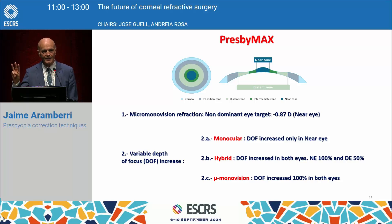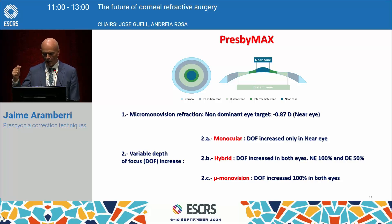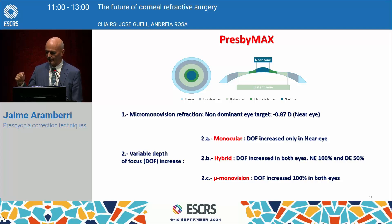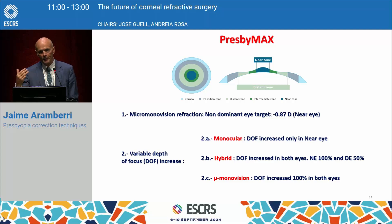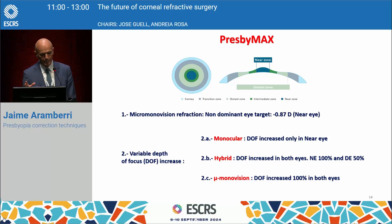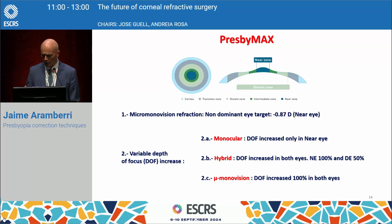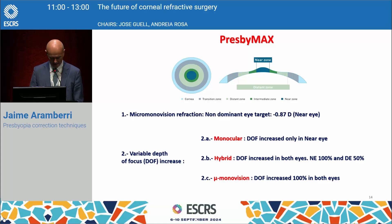There are three different strategies to get some depth of focus. Monocular: depth of focus is increased only in the near eye — this will be for patients that prefer to preserve distance vision as their priority. Something intermediate is called hybrid, where depth of focus is increased in both eyes. And micro-monovision, where depth of focus is increased 100% in both eyes.